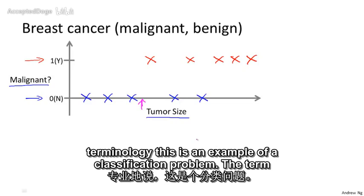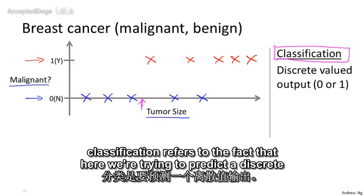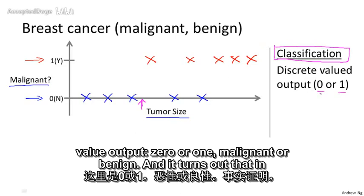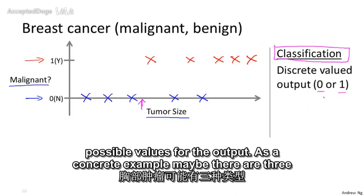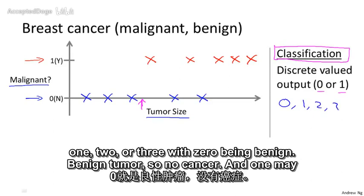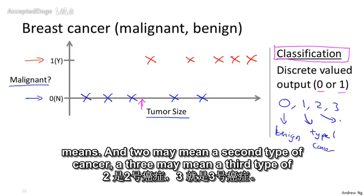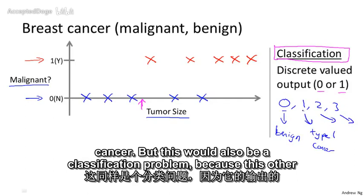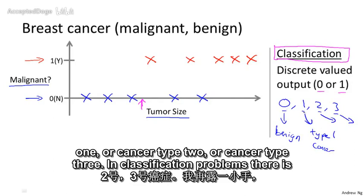To introduce a bit more terminology, this is an example of a classification problem. Classification refers to the fact that here we're trying to predict a discrete valued output — zero or one, malignant or benign. In classification problems, you can have more than two possible values for the output. For example, maybe there are three types of breast cancers, so you might predict a discrete output of zero, one, two, or three, where zero means benign, one means cancer type one, two means cancer type two, and three means cancer type three.